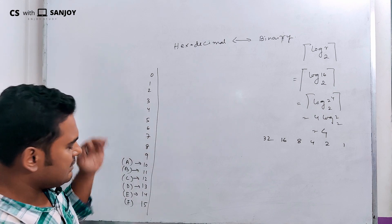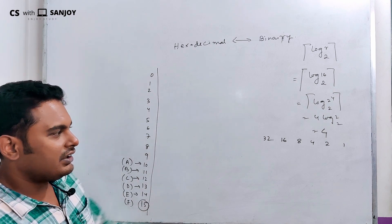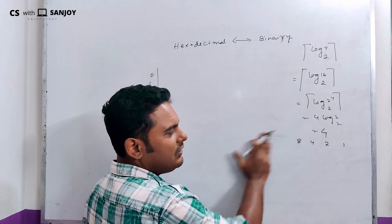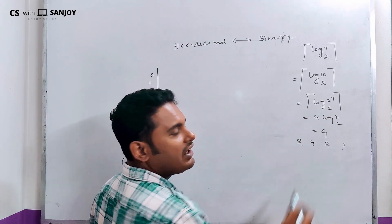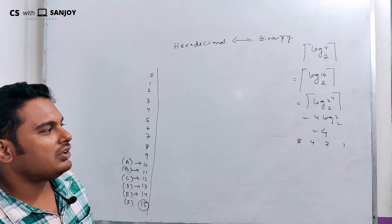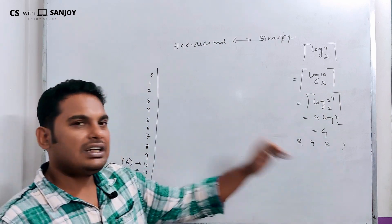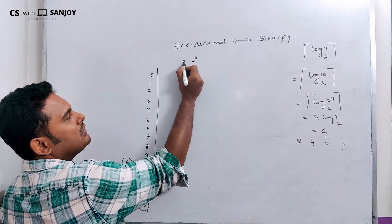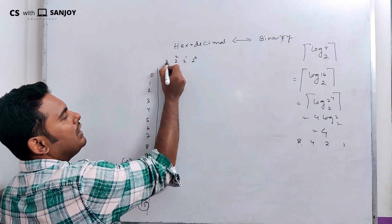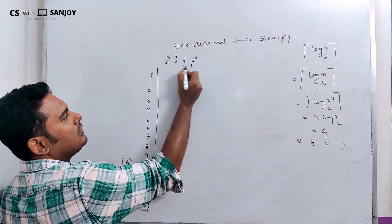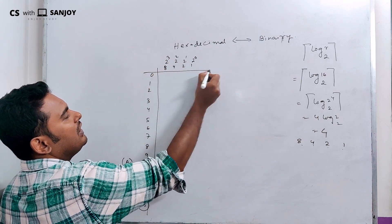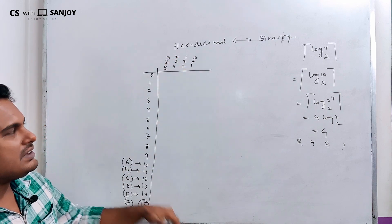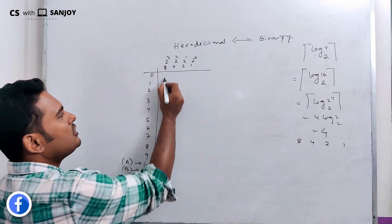The maximum value is 15. The positional values in the 4-bit binary are 1, 2, 4, 8. So from 2 to the power 0 we get 1. We have 4 binary bits to represent each hexadecimal digit.